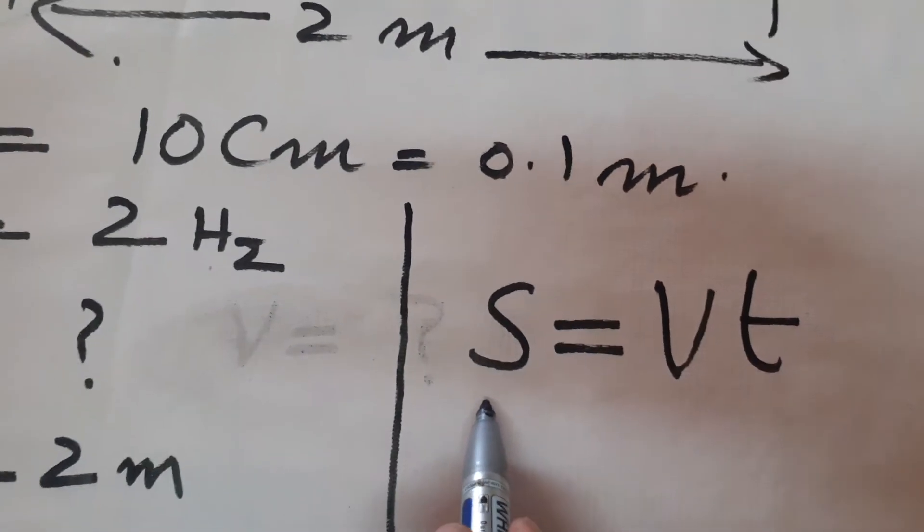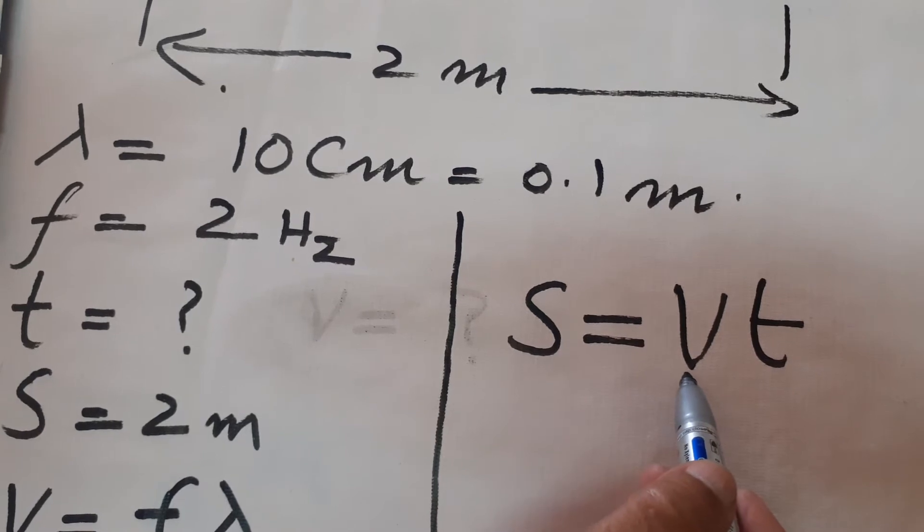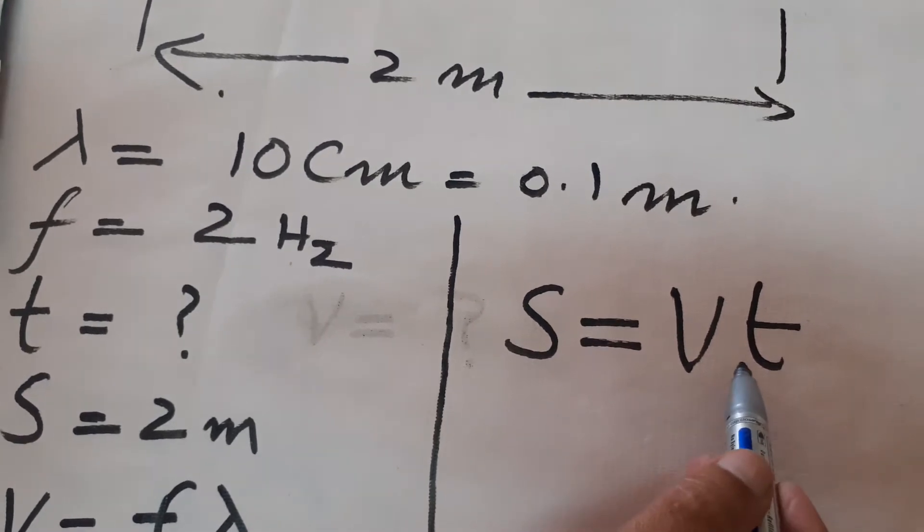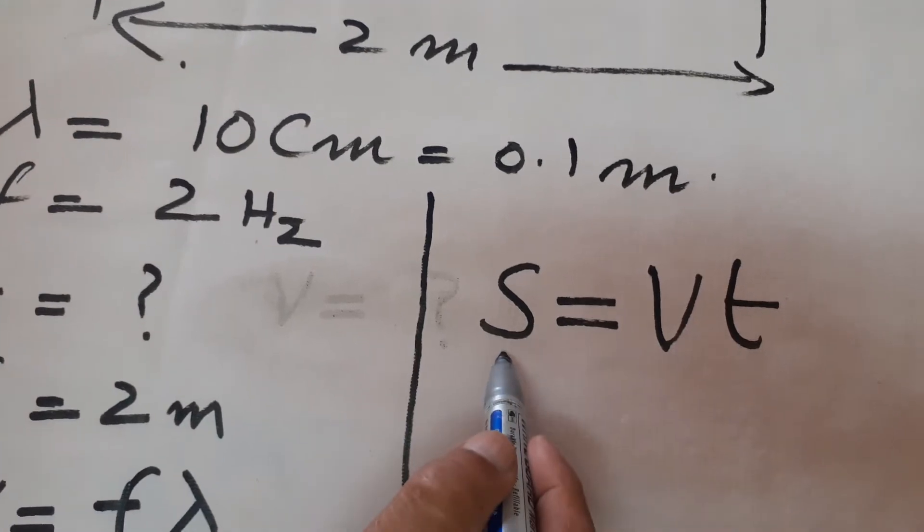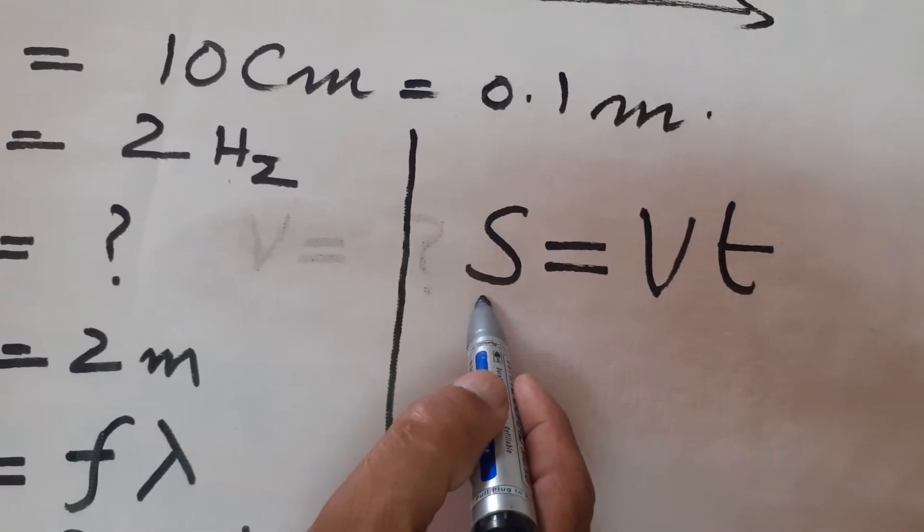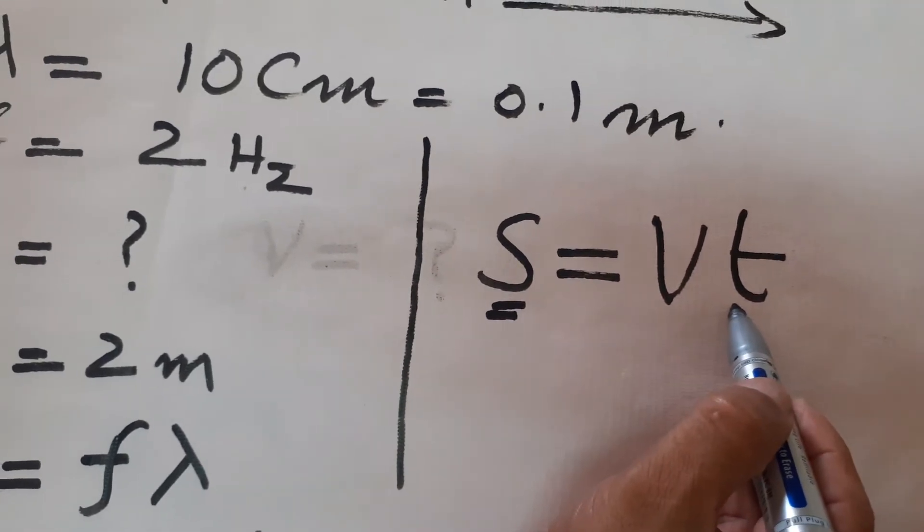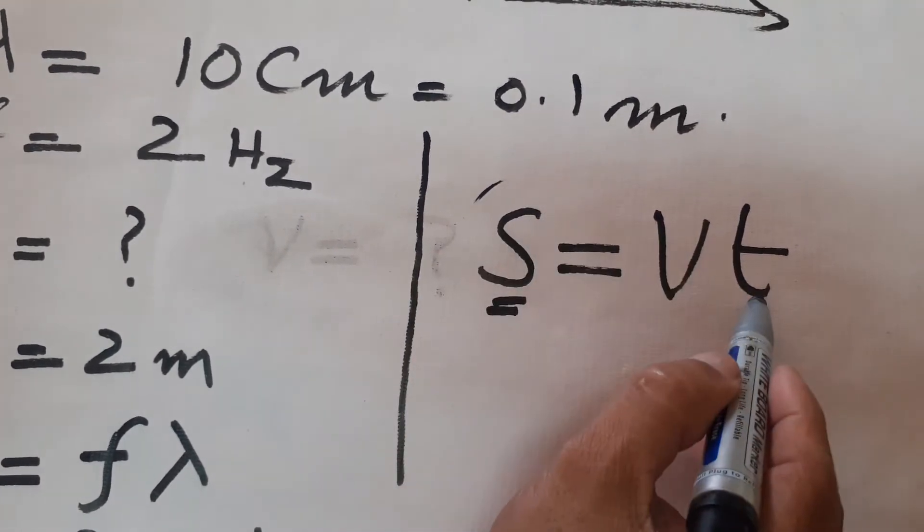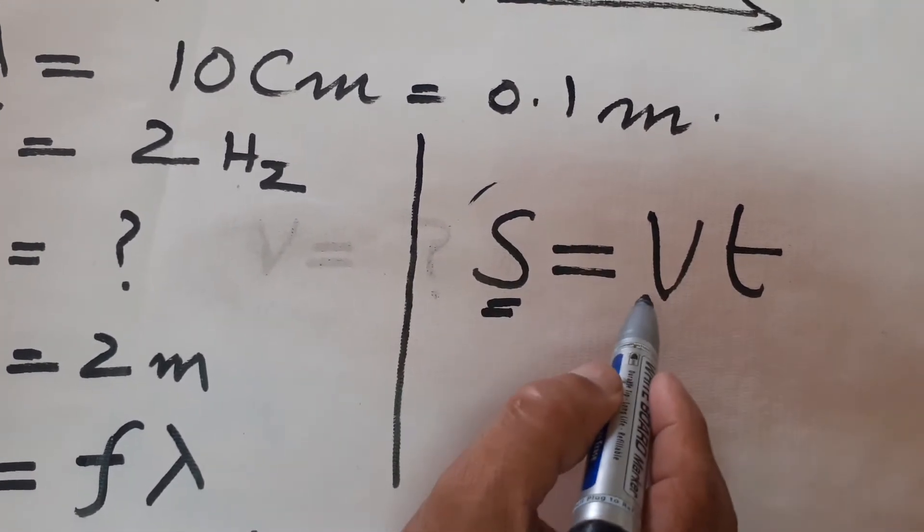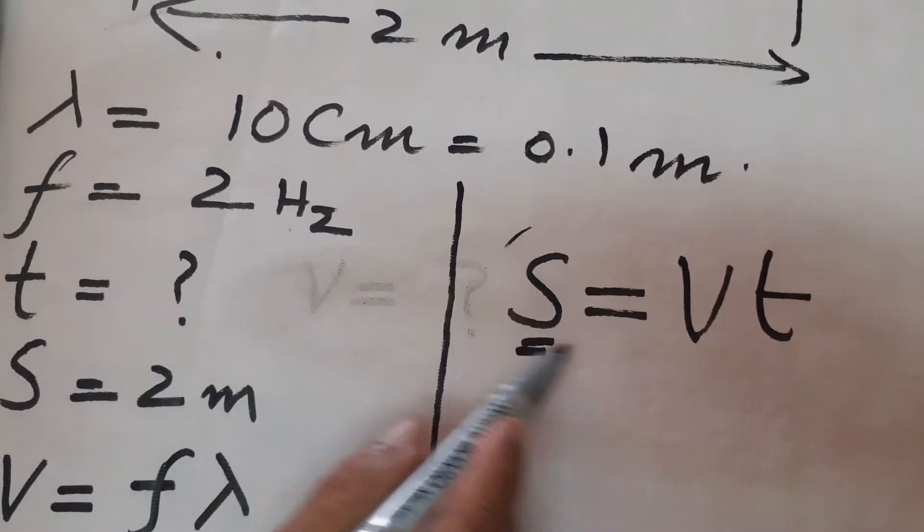Distance covered by velocity times time, so s = vt, where v is velocity and t is time. We have the distance, we need to find the time, and we also have to find the velocity.